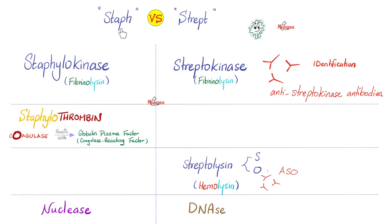After finishing staph, the next videos will cover streptococci. Key comparisons: staphylococcus has staphylokinase; streptococci have streptokinase — both called fibrinolysin. Staph has staphylothrombin (coagulase); strept does not. Streptococci have streptolysin (hemolysin) such as ASO; staph does not. Staph has nuclease; strept has an equivalent — DNase.